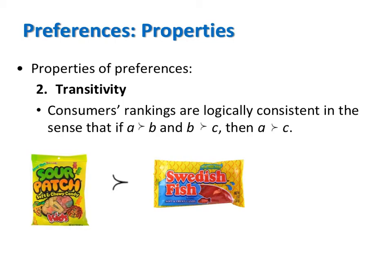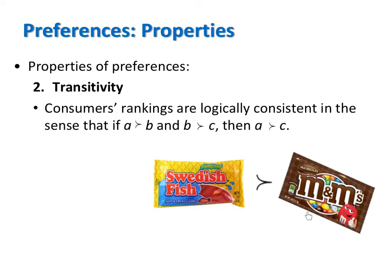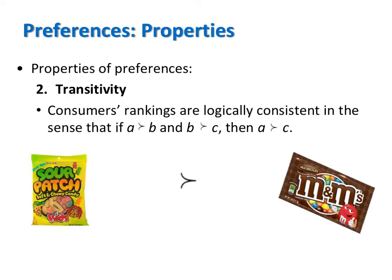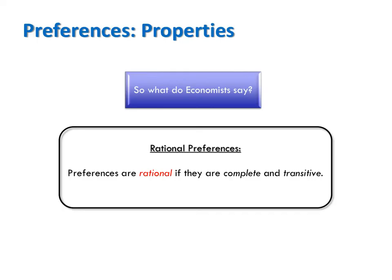The second property that we will always assume holds true is called transitivity. We assume transitivity so that preferences follow a logically consistent pattern. For example, if we strictly prefer A to bundle B and B to bundle C, then it should follow that we strictly prefer A to C. For example, I strictly prefer Sour Patch Kids to Swedish Fish, and I strictly prefer Swedish Fish to M&Ms. By the property of transitivity, it follows that I strictly prefer Sour Patch Kids to M&Ms. We will always assume that preferences are complete and transitive — we call this rational. I do acknowledge that preferences are not always rational; people act irrationally all the time. In fact, there's a branch of economics called behavioral economics that addresses this, and we'll look at an example or two in class.